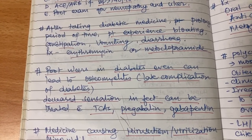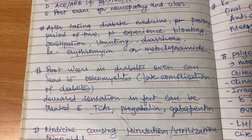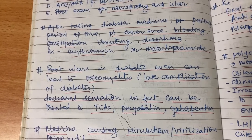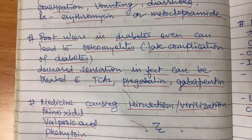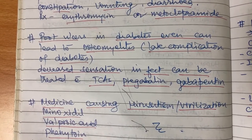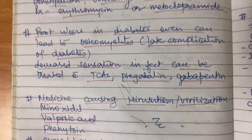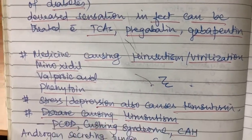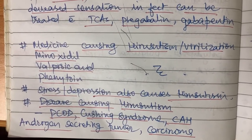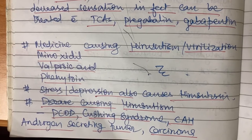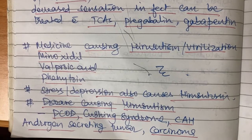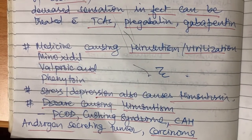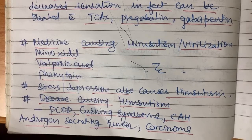Decreased sensation in feet can be treated with TCAs, pregabalin, and gabapentin, and also with vitamin B12. Medicines causing hirsutism and virilization are minoxidil, valproic acid, and phenytoin. Stress and depression also cause hirsutism. Diseases causing hirsutism include PCOS, Cushing's syndrome, CAH (congenital adrenal hyperplasia), and androgen-secreting tumor carcinoma.